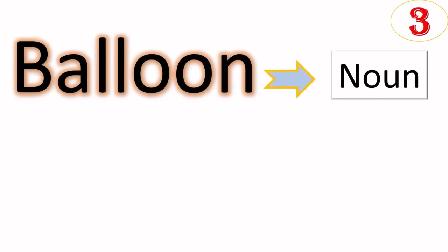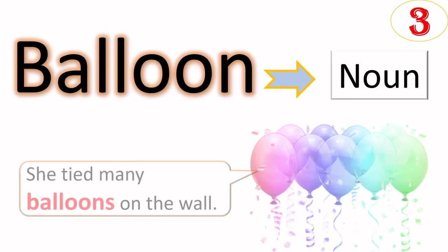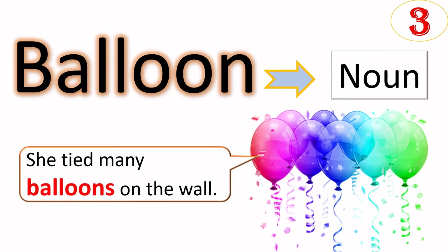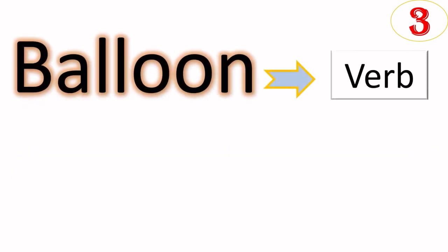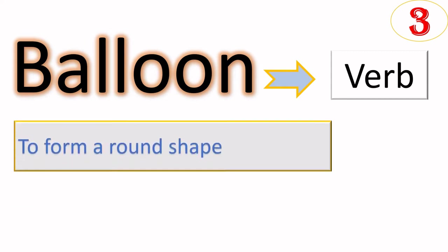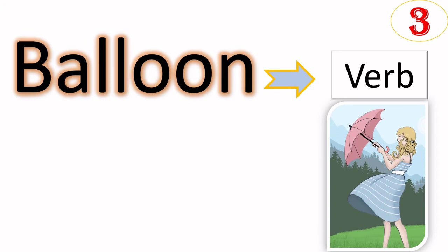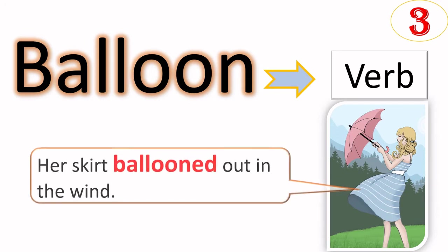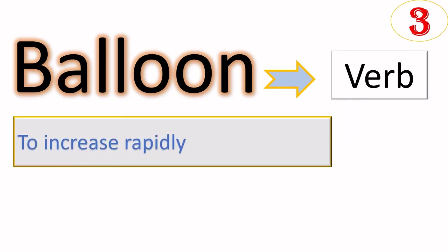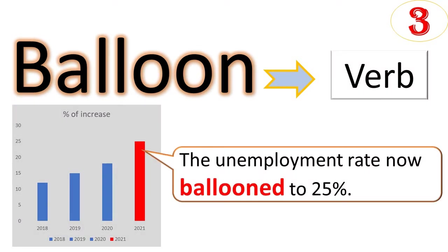Balloon as noun means balloon. For example, she tied many balloons on the wall. When we use the same word as verb, it means something very different. It means to form a round shape. An example can be her skirt ballooned out in the wind. It can also mean to increase something rapidly. Another example can be the unemployment rate now ballooned to 25 percent.